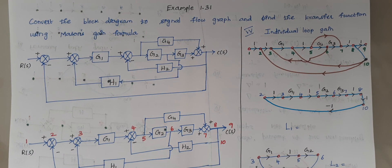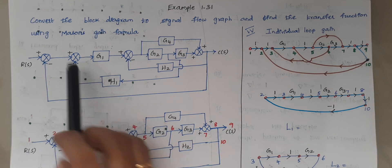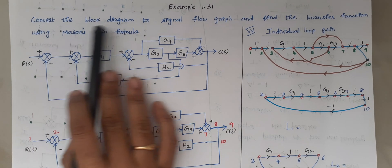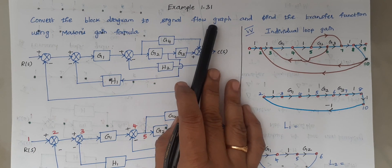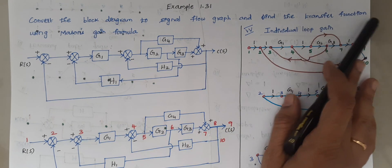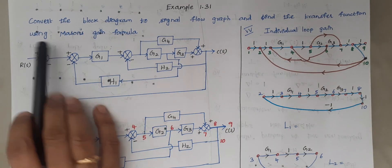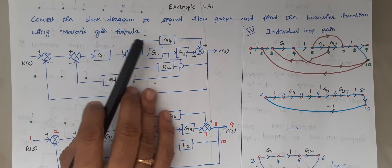Hello viewers, I am Kaushalya. Today we are going to solve the problem: convert the block diagram to signal flow graph and find the transfer function using Mason's gain formula.